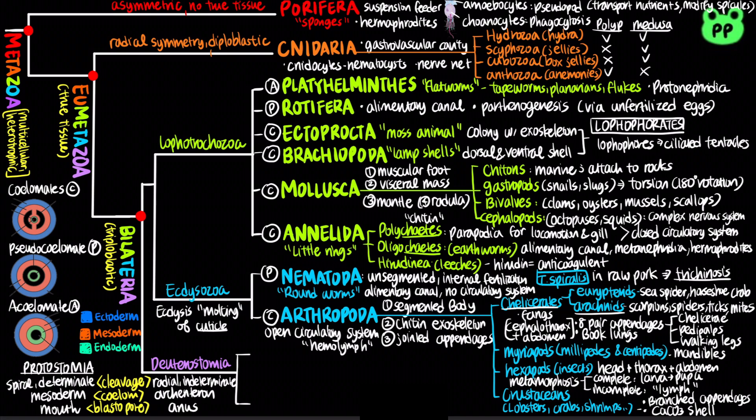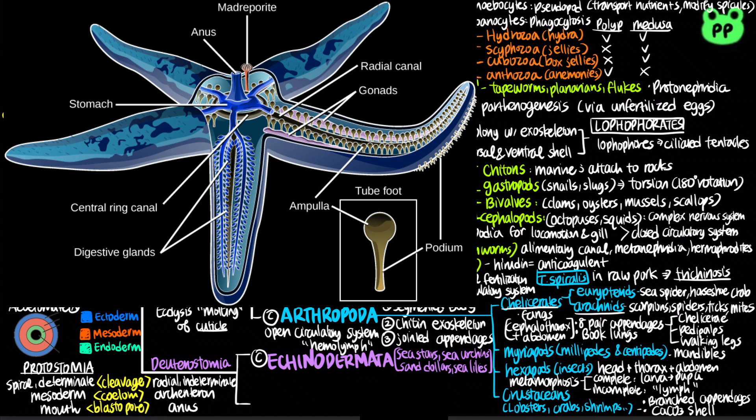Deuterostomia includes the phylum Echinodermata, which are slow-moving or sessile marine animals that include sea stars, sea urchins, sand dollars, and sea lilies. Echinoderms are characterized by a unique water vascular system — a network of hydraulic canals branching into tube feet that function in locomotion, feeding, and gas exchange.